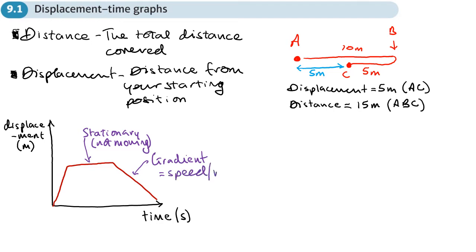I'll put 'slash velocity' because there is a slight difference between the two. We know that a steeper gradient equals faster movement.